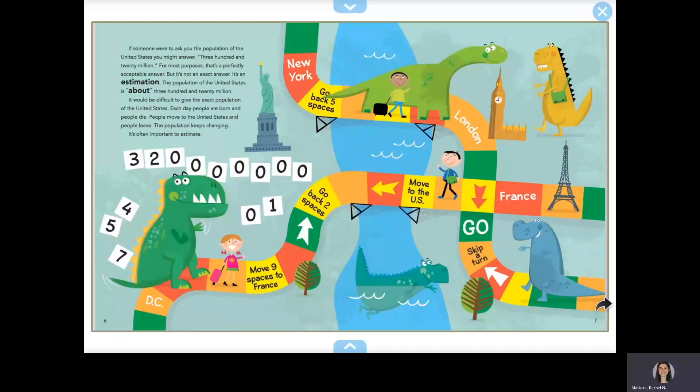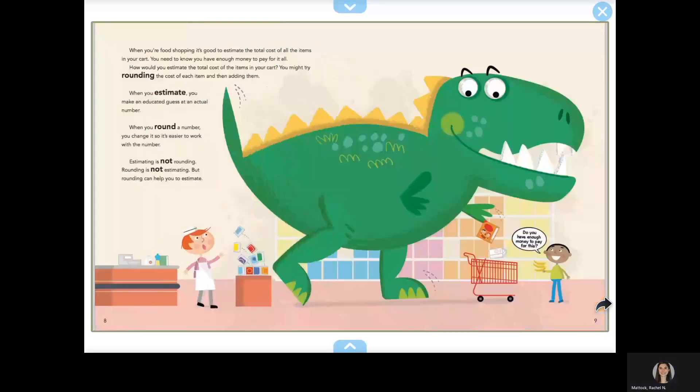It's often important to estimate. When you're food shopping, it's good to estimate the total cost of all the items in your cart. You need to know you have enough money to pay for it all. How would you estimate the total cost? You might try rounding the cost of each item and then adding them up.